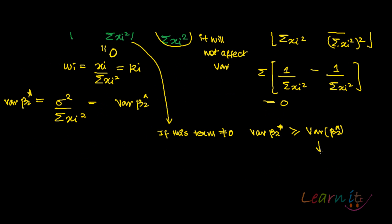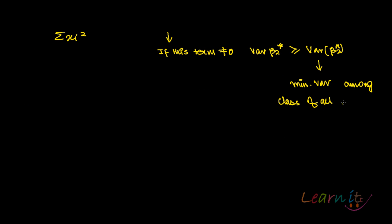What does this prove? That variance of beta 2 hat is minimum variance among the class of all linear and unbiased estimators.